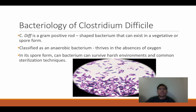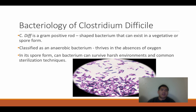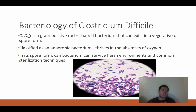Regarding the bacteriology of C. diff: it is a Gram-positive rod bacterium that can exist in a vegetative or spore form. It is classified as an anaerobic bacterium that thrives in the absence of oxygen. Most importantly, in its spore form the bacterium can survive harsh environments and common sterilization techniques. C. diff spores are highly resistant to high temperatures, ultraviolet light, harsh chemicals, and antibiotics.